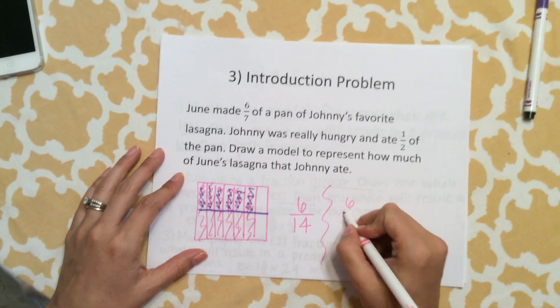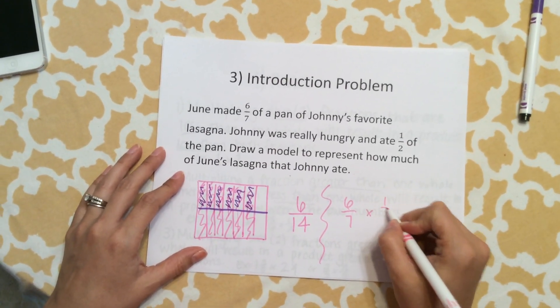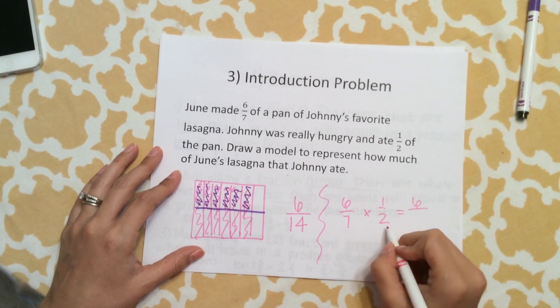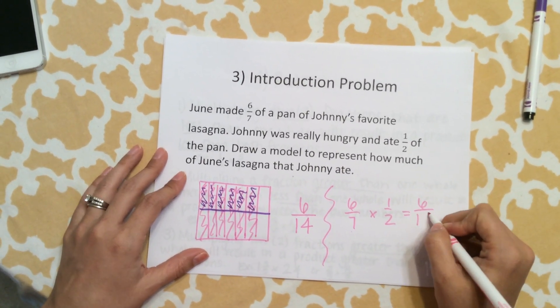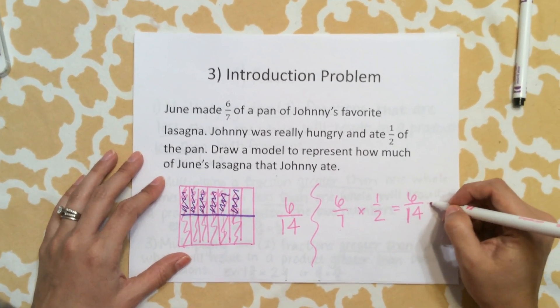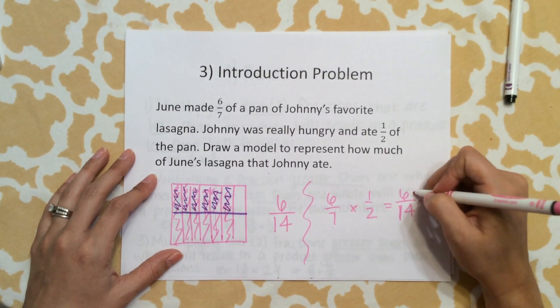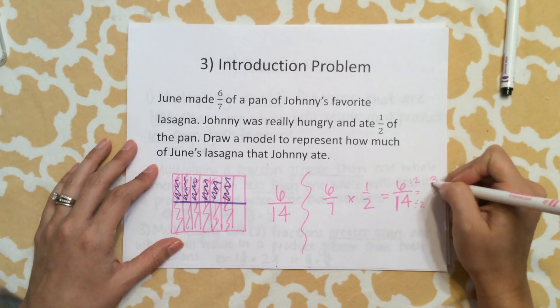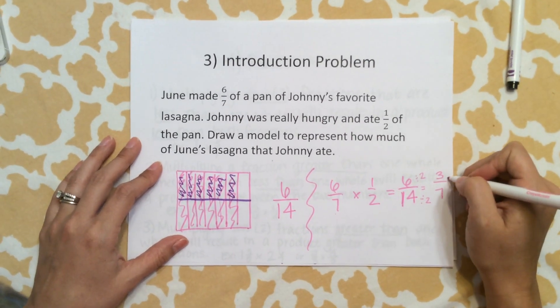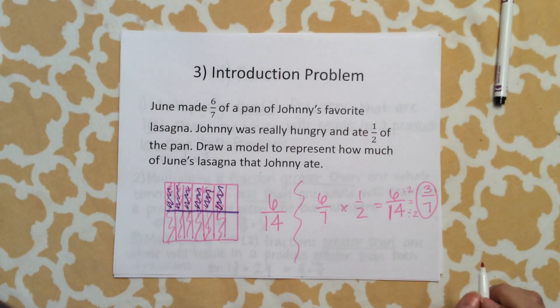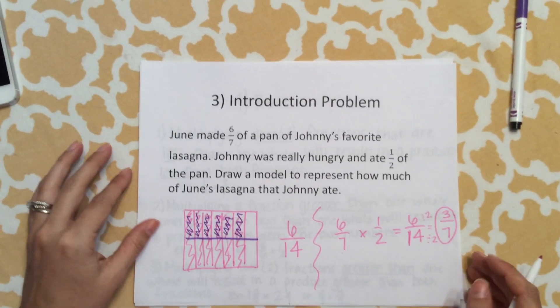There's another way we can look at it. If we just wanted to multiply straight across, 6 times 1 is 6, 7 times 2 is 14. We should simplify this—we don't want to leave this as 6/14. Let's look at how many times does 2 go into 6 and 2 go into 14. We have 3/7. We're always going to put our answers in the simplest form, so make sure you have this in your notes.